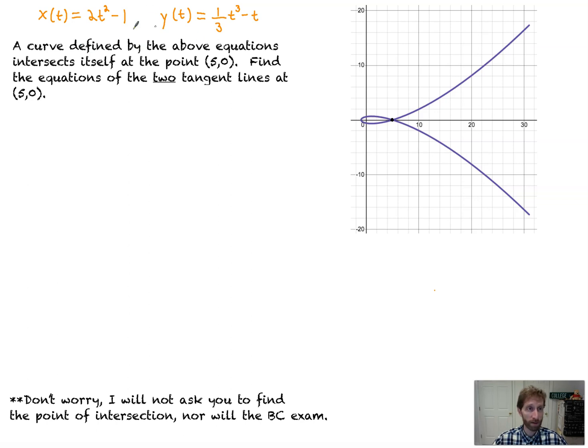A curve defined by the above equations intersects itself at the point (5,0). Find the equations of the two tangent lines at (5,0). So to find the equation of a tangent line, remember that our goal is that we want y minus y₁ equals m times (x minus x₁). That's what we want.